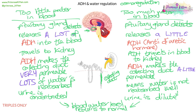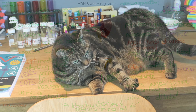The important things to remember: ADH stands for anti-diuretic hormone. The more ADH, the more water is absorbed. If there's a lot of ADH in the blood, a lot of water is reabsorbed from the collecting duct because it is made very permeable. If there's a little ADH, a little water is reabsorbed because the collecting duct is only a little permeable.